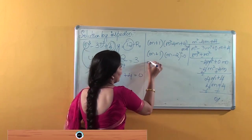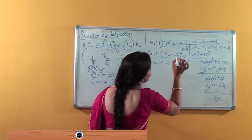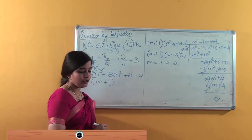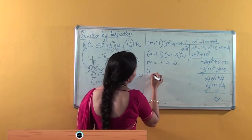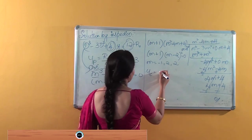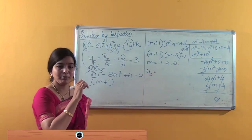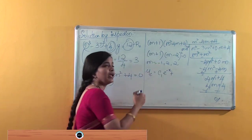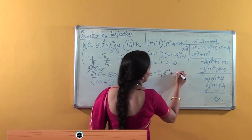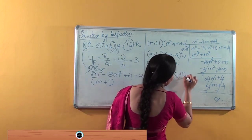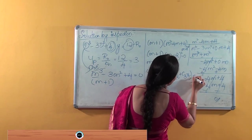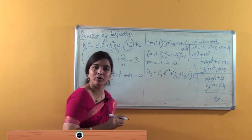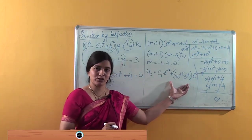The roots are m = -1, 2, 2. The root 2 is repeated twice. Since root 2 is repeated twice, the complementary solution is: yc = c1·e^(-x) + (c2 + c3·x)·e^(2x).